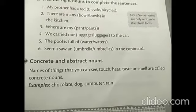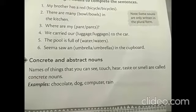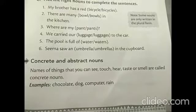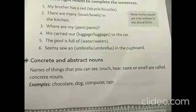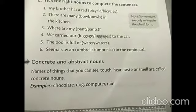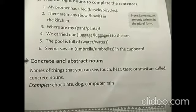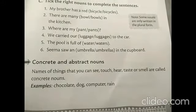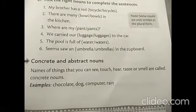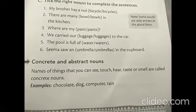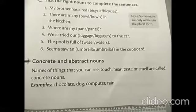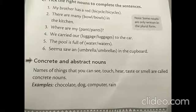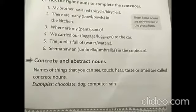For example, chocolate. You can touch a chocolate, you can taste a chocolate, and you can even smell the chocolate. For example, dog also — it is a living thing. You can touch a dog, you can feel the touching of a dog. That is nothing but a concrete noun.